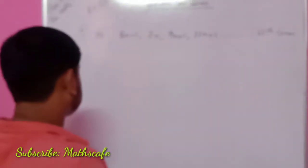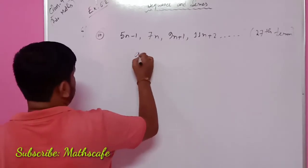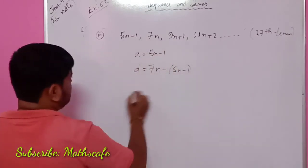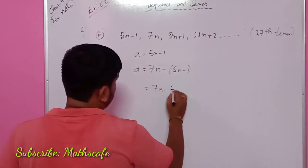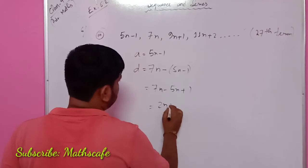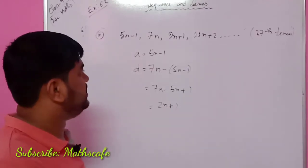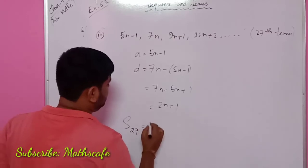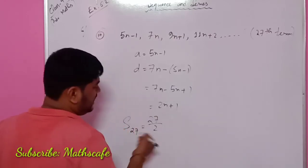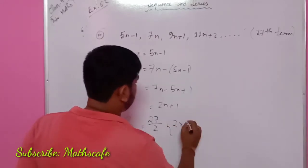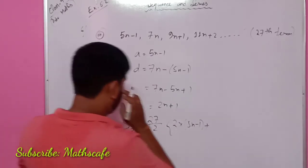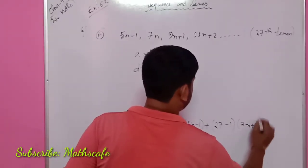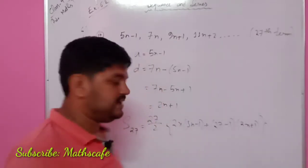Number three: a equals 5n minus 1, and the common difference is 7n. We have the first term, and the number is 7n minus 5n plus 1, so the common difference is 2n plus 1. The number of terms is 27. So S of 27 — the formula is given to you: n by 2, twice a. This value is given to you: 5n minus 1. The number is n minus 1, which means 27 minus 1. And what is the value of d? 2n plus 1.